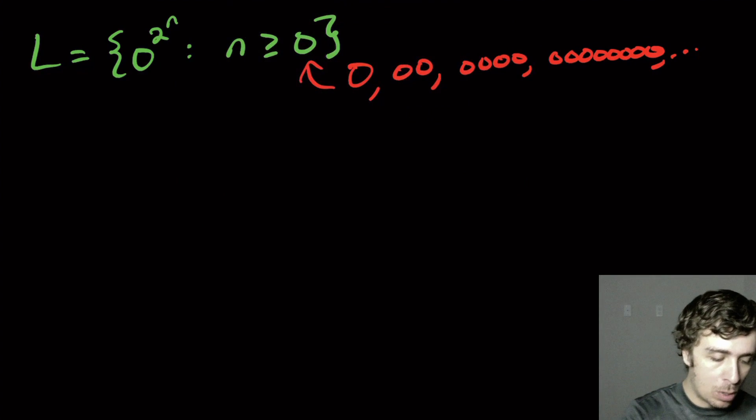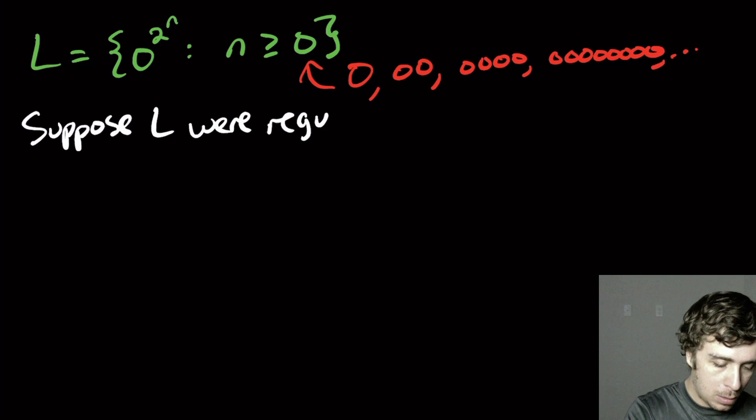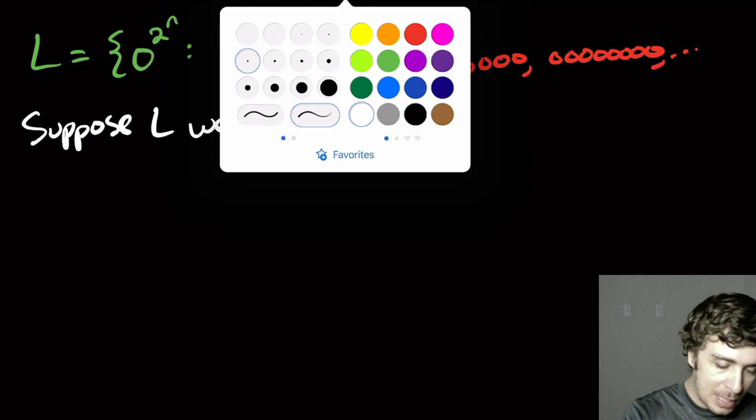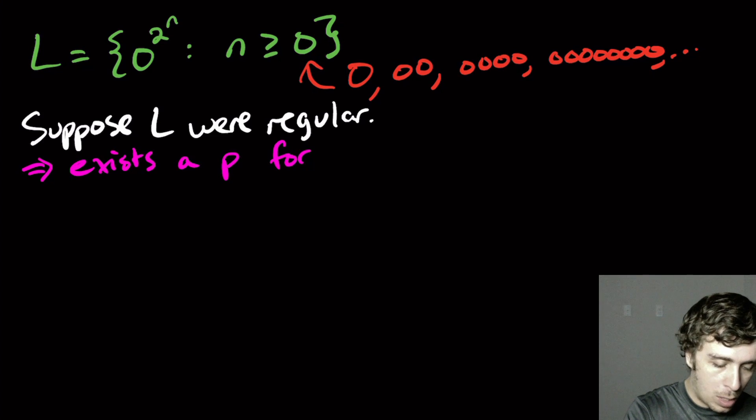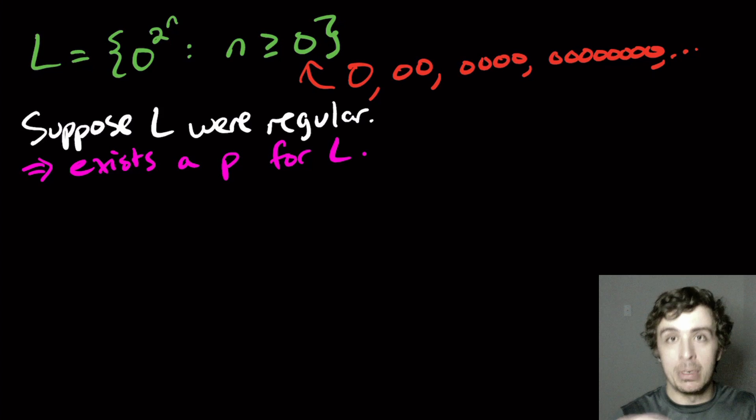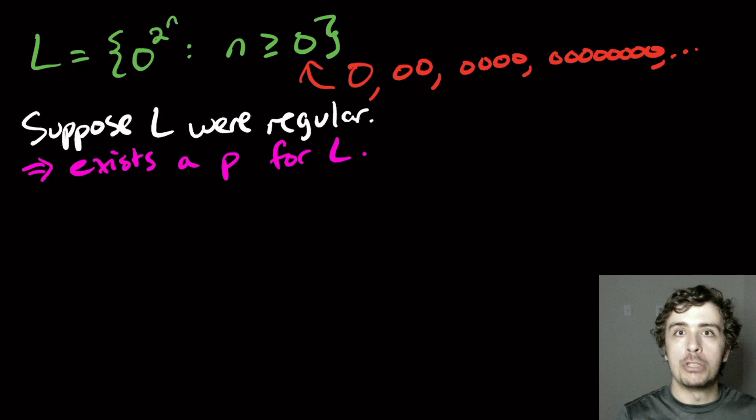So let's suppose that it were regular. Suppose L were regular. Then what does that mean? That means that there is some pumping constant P for L. So there exists a P for this language L. And I'm just abbreviating that to say exists a P. So then now what we need to do is we need to pick a string that is in that language and of length at least P.